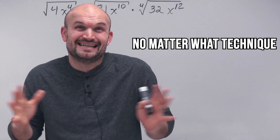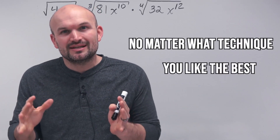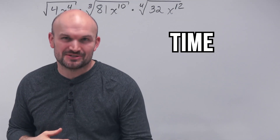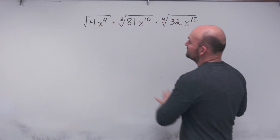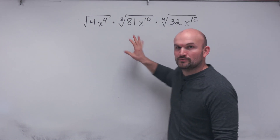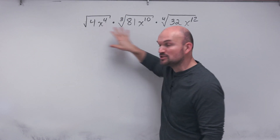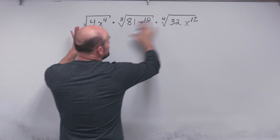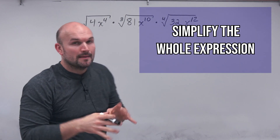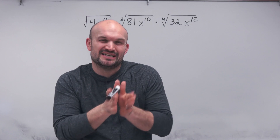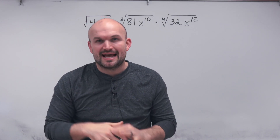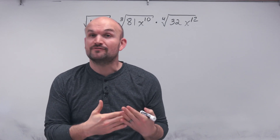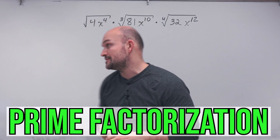No matter what technique you like the best, it's really going to depend on what you're comfortable with, as well as the time that you have. So we're going to work through these different techniques with three different radical expressions. I am multiplying these expressions to overall simplify the whole expression, but I want to look at each radical individually and use a different technique. The easiest way to understand simplifying a radical expression is to first look at the prime factorization.